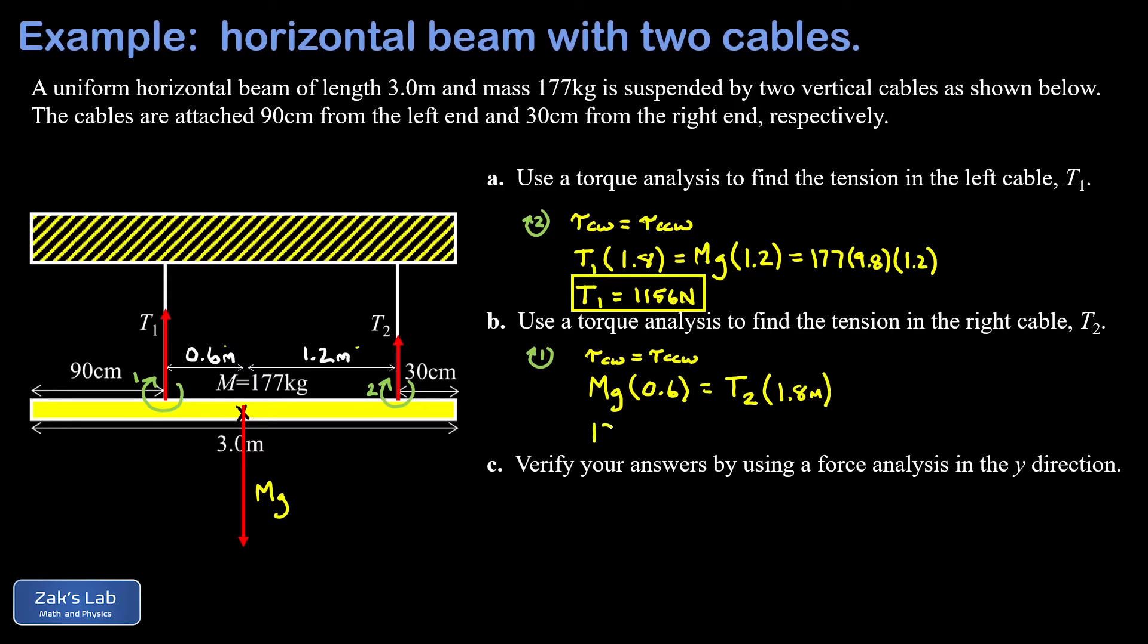We throw in the numbers for m and g: 177 kilograms, 9.8 meters per second squared, a lever arm of 0.6 meters. On the right hand side, T2 times 1.8. I simply multiply the numbers on the left and divide by 1.8, and this gives me roughly 578 newtons.